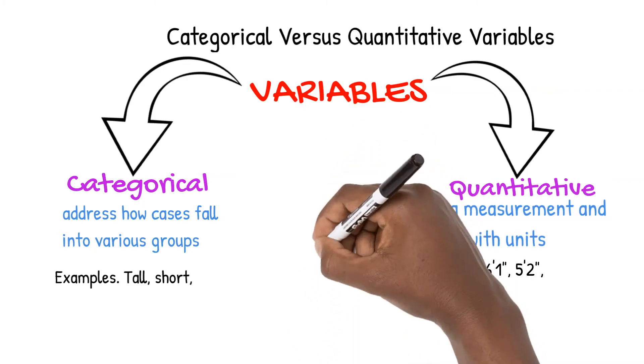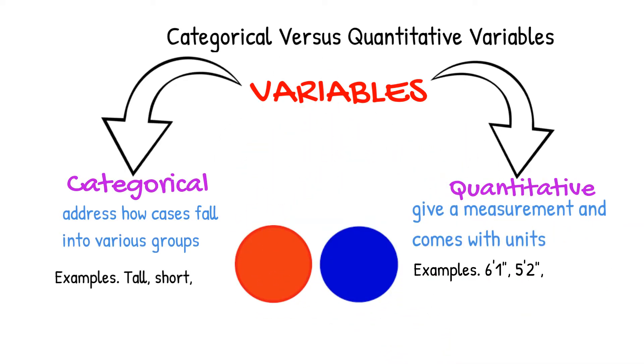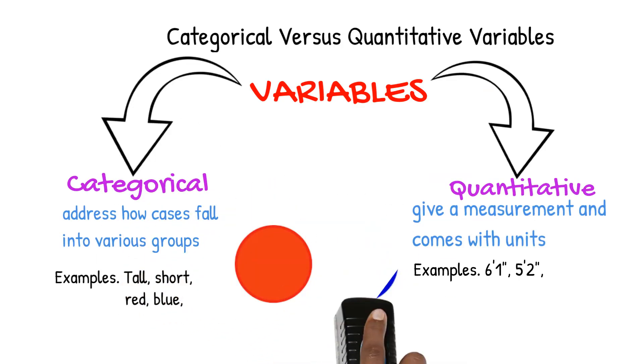Let's look at another example. Here are two circles. If I asked for the distinguishing quality of these circles, you'd probably tell me their colors, blue and red. Colors are an example of categorical data since it's a way to group our cases.